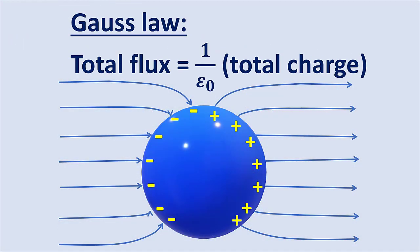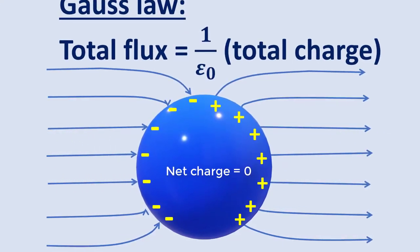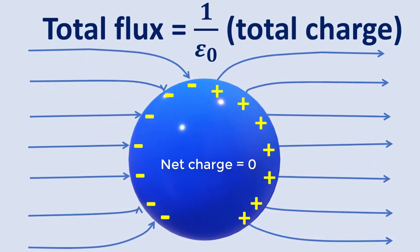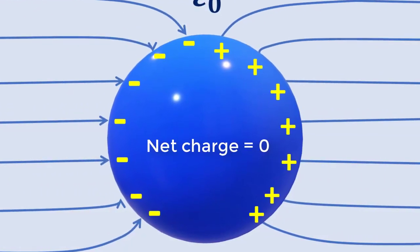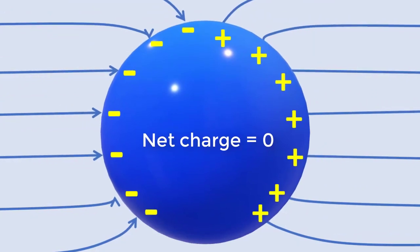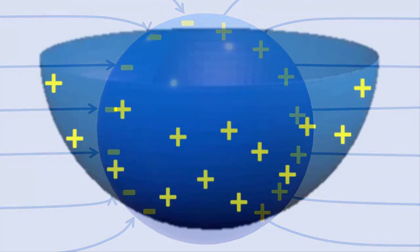With Gauss's law, we can easily prove that there is no net charge inside the conductor. The charges must reside only on the surface of the conductors. This is true for both solid and hollow conductors.